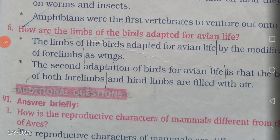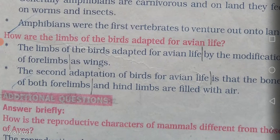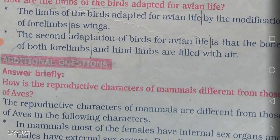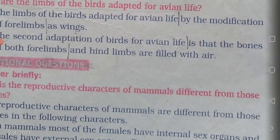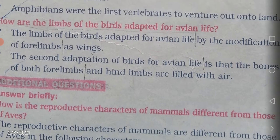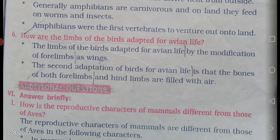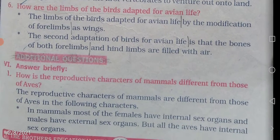How are the limbs of birds adapted for avian life? The limbs of birds are adapted by modification of forelimbs as wings. The bones of both forelimbs as well as hindlimbs are filled with air — that is why they are called pneumatic bones.